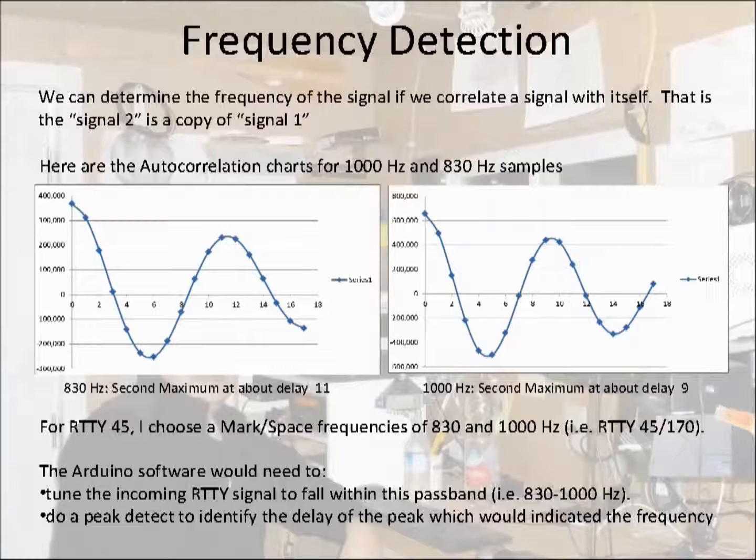What I'm basically describing here is what's called autocorrelation. It's where you take a signal and you correlate it with itself. That is, I sample the signal and then I correlate the signal with a copy of itself. There are a lot of sources on the internet detailing how to use autocorrelation to detect frequencies. What I'm showing here is result for autocorrelation of an 830 hertz signal and a 1000 hertz signal. And you can see that the delay for the maximum shifts depending on the frequency. For RTTY 45, I'm using 170 hertz separation between mark and space frequencies, hence the 830 and 1000 hertz frequencies.